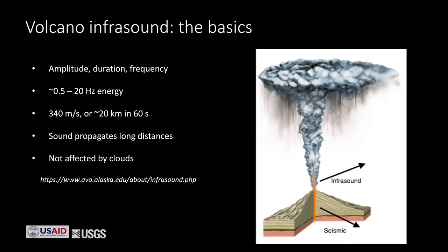Larger eruptions produce more low-frequency energy. A very large subplinian or plinian eruption can have energy down to 10 seconds or even lower, but 0.5 to 20 hertz is the typical volcano band. The propagation speed of infrasound waves in the atmosphere is usually around 340 meters per second, which slows down in a colder atmosphere — that equates to the wave traveling about 20 kilometers in about a minute.